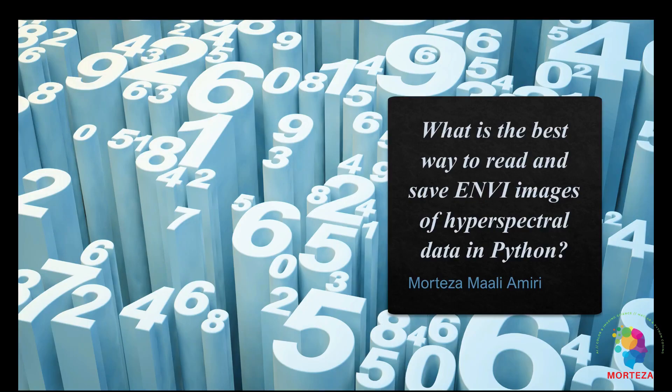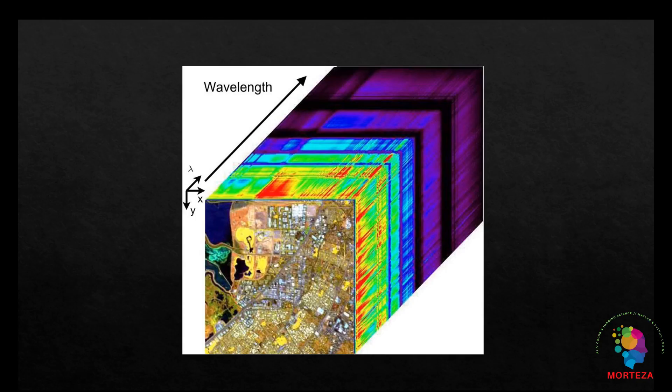In this video I want to talk about what is the best way to read and save ENVI images of hyperspectral data in Python. I have already talked about hyperspectral images and the ENVI format in prior videos on my channel. In this video I want to be more focused on the coding part, especially when it comes to reading and saving them in a directory.